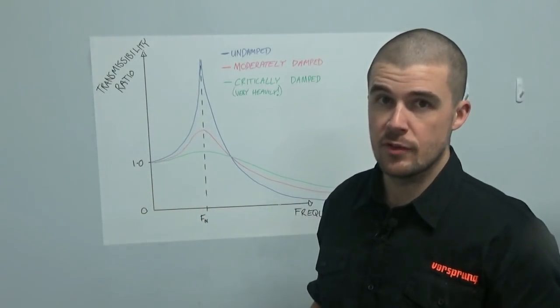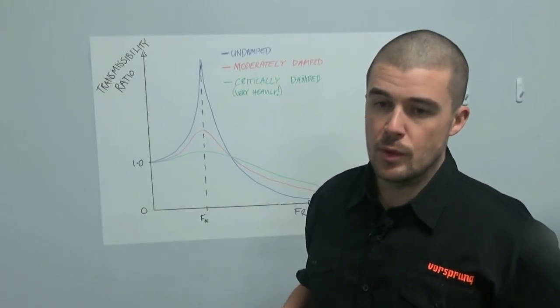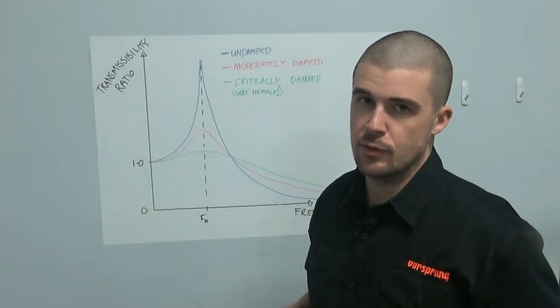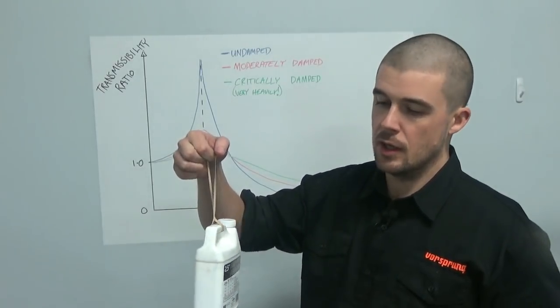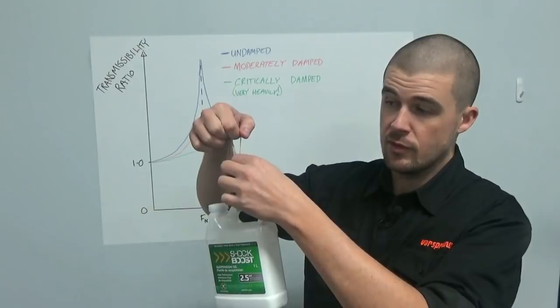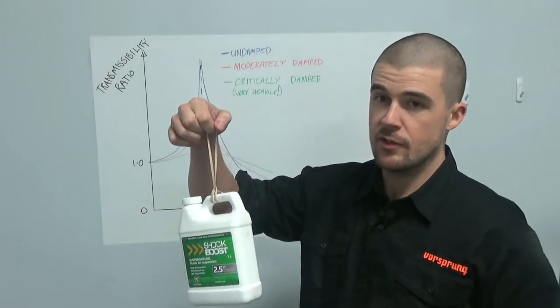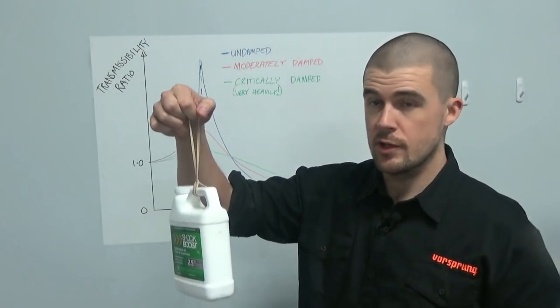Everything has what we call a natural frequency. And that natural frequency is basically determined by the ratio of the spring stiffness, in this case, the rubber band, to the mass, and square root of that ratio, actually.